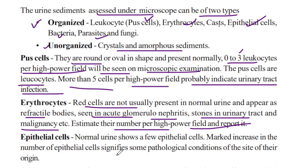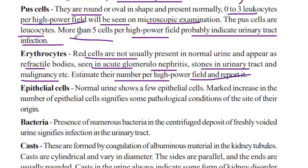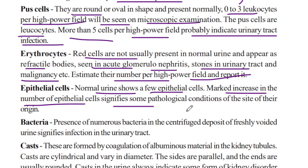Epithelial cells are normal urinary cells. The number of epithelial cells signifies some pathological condition of the site of their origin.